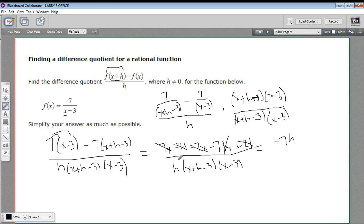And actually, look, this h can cancel with this h on the bottom. So let me get rid of this h. So I'm really just left with negative 7 on the top and my two factors on the bottom, x plus h minus 3 and x minus 3.